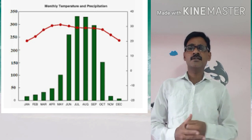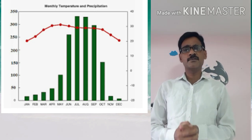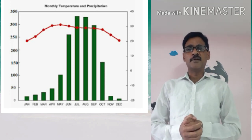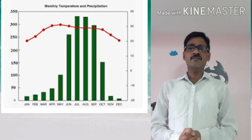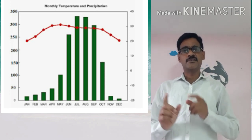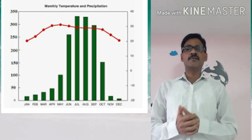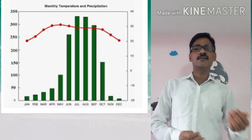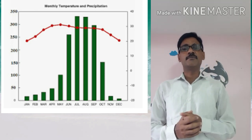Climographs show the monthly values of maximum temperature, minimum temperature, rainfall, and other elements.